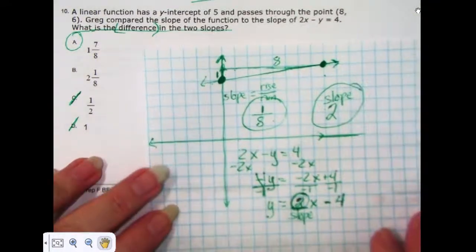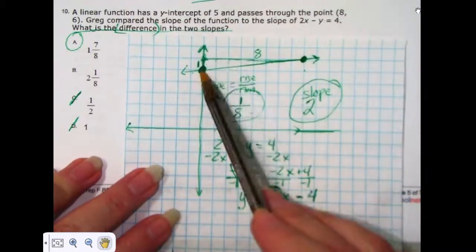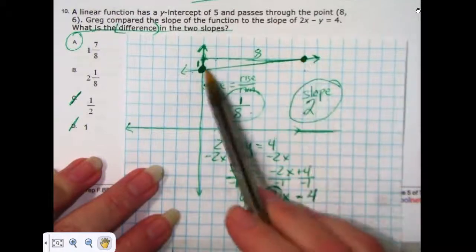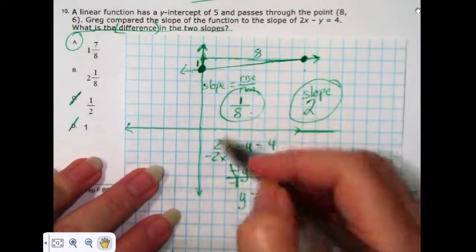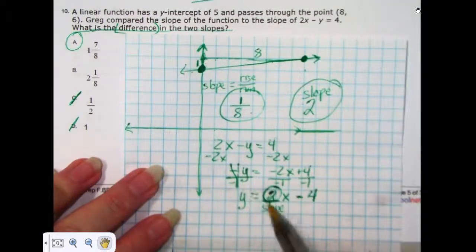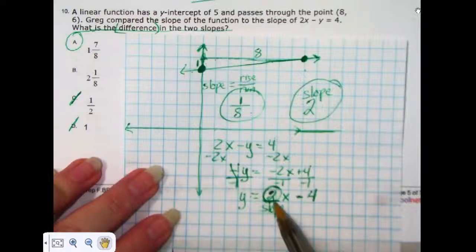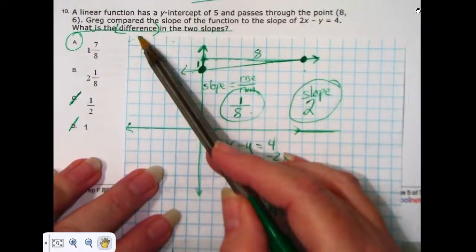Notice that this question had so many parts to it. It had the first part where you had to graph a y-intercept and another point and find the slope of that line. Then it had another part where they gave you the equation of the line and you had to solve for y to find the slope of that line. Then it asked you what is the difference between these two slopes, and you had to know that difference meant subtract.